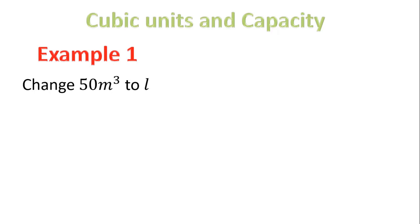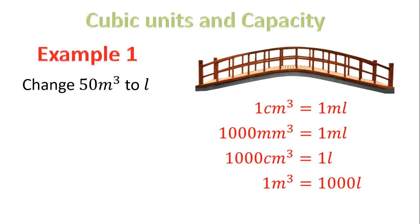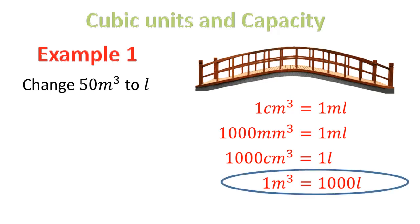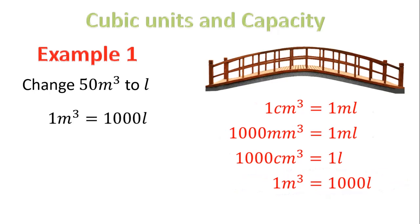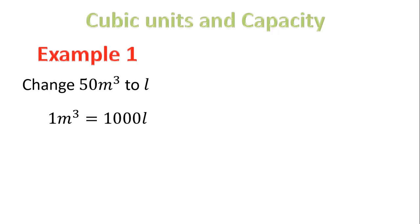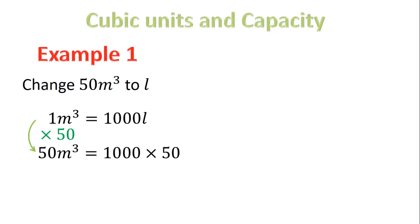Let's look at example one — this is probably how you'll get asked it. Change 50 meters cubed to liters. We look at our bridges and find the one that has meters cubed and liters — it's the last one. One meter cubed equals a thousand liters. We write it down: one meter cubed equals a thousand liters. We want 50 meters cubed, so how do I go from one to 50? I times by 50. That means on my right-hand side I have one thousand times 50, which gives me 50,000 liters.